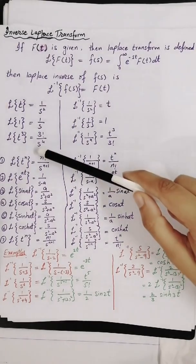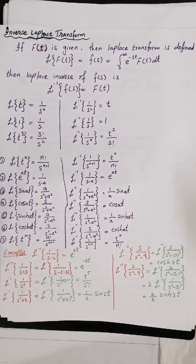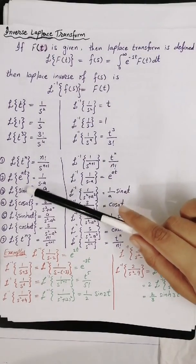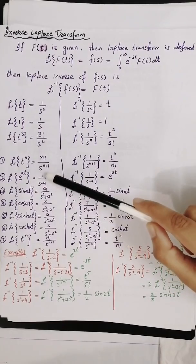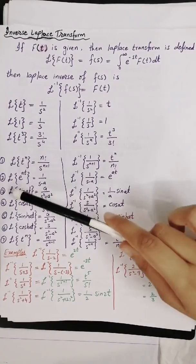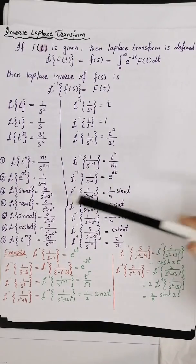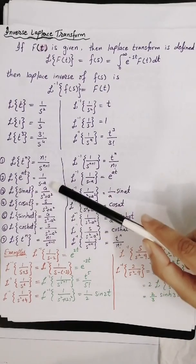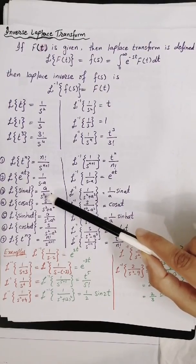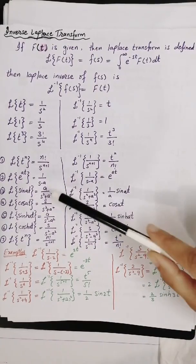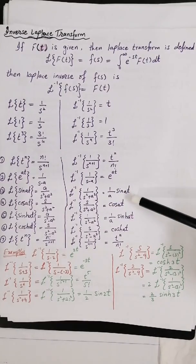If you have all these formulas, finding the Laplace inverse is simple — you just take it in reverse. Laplace of e^(at) equals 1 over (s minus a), so Laplace inverse of 1 over (s minus a) equals e^(at). And Laplace of sin equals a over (s² + a²), so Laplace inverse of 1 over (s² + a²) equals 1 over a times sin(at).